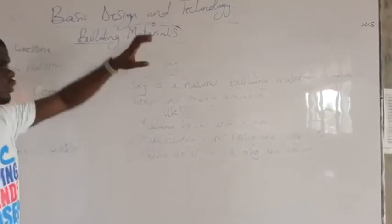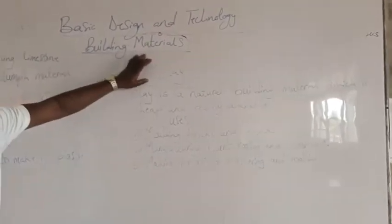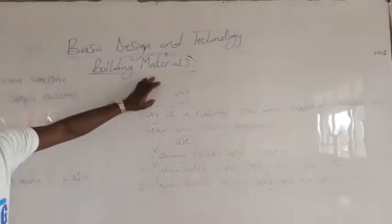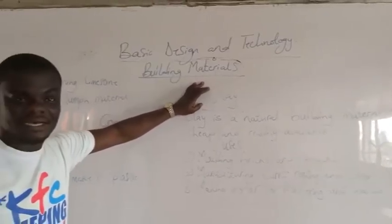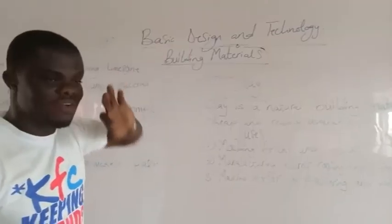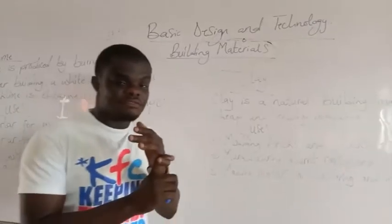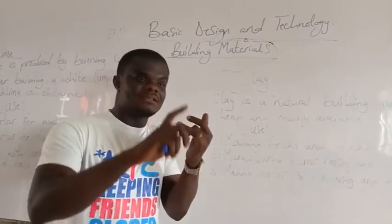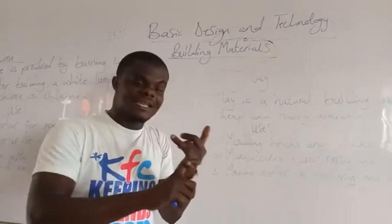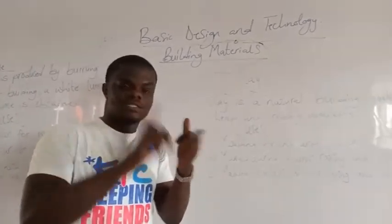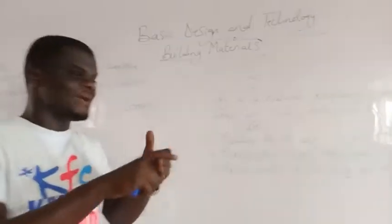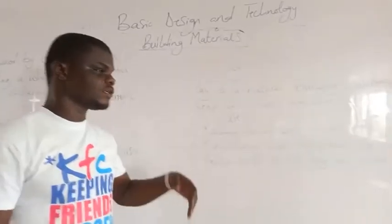Uses of clay. Clay is also another type of binding material. I told you we have only three types of binding material, which is clay, lime, and cement.